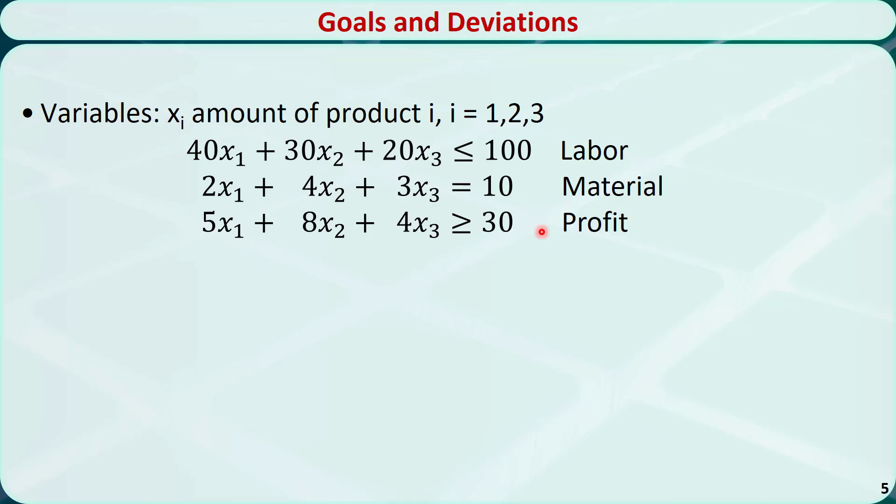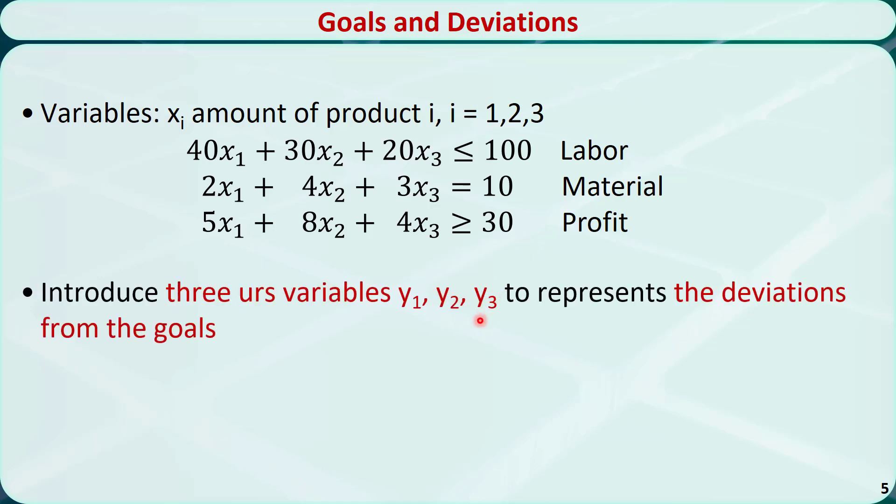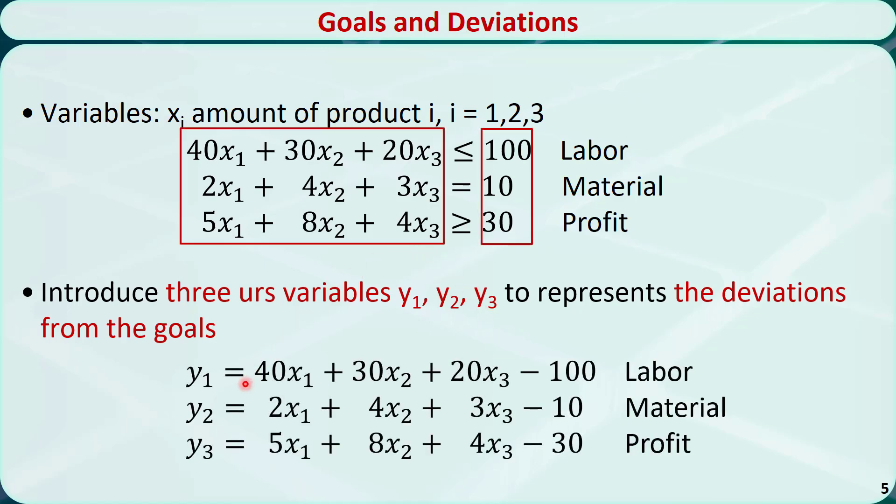Now let's introduce three variables, Y1, Y2, and Y3. They represent the deviations from the goals. For example, Y1 is equal to the number of employees needed in the project minus the goal, which is 100 employees. If the needed number of employees is less than 100, then Y1 is a negative number. If the needed number of employees is equal to 100, Y1 is 0. If the needed number of employees is greater than 100, Y1 is a positive number. Therefore, Y1 is an unrestricted in sign variable. So are Y2 and Y3.